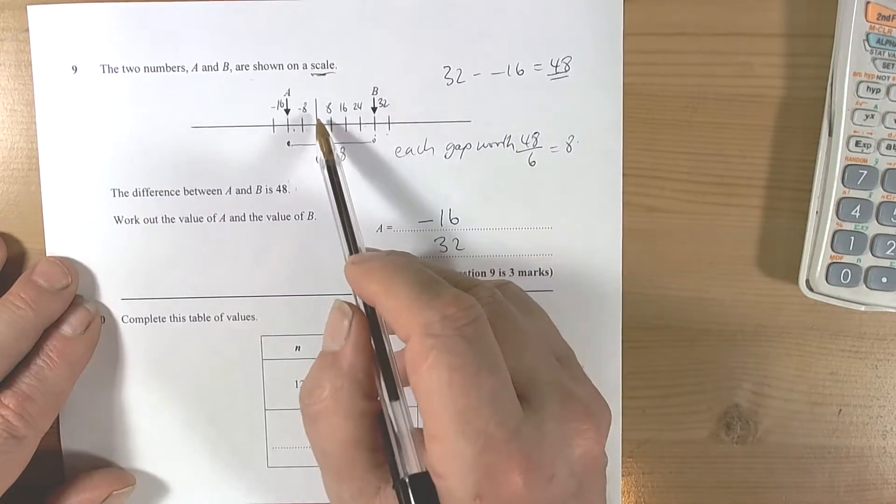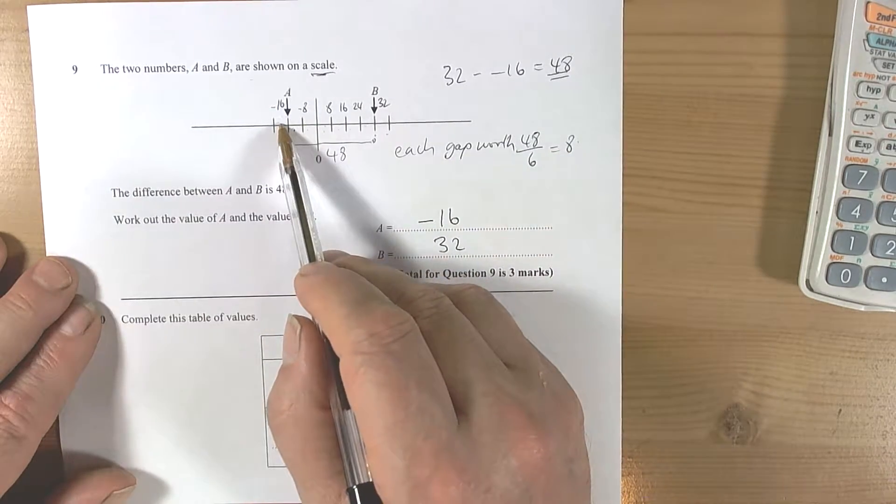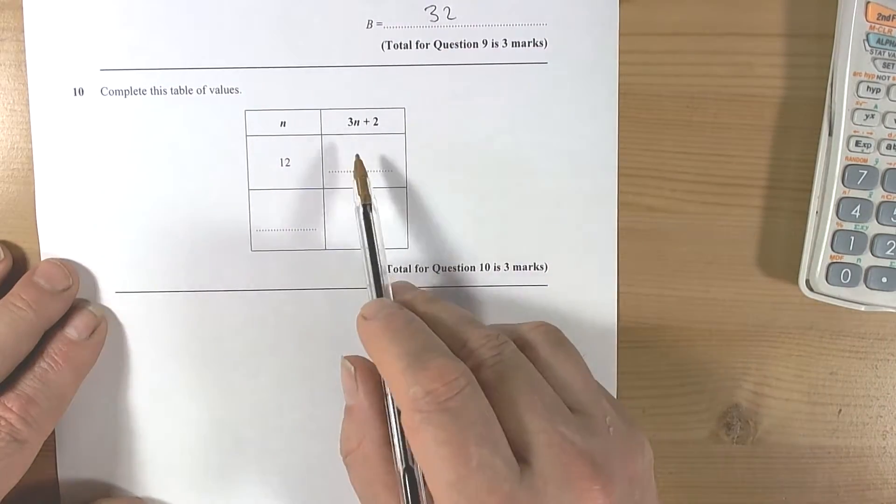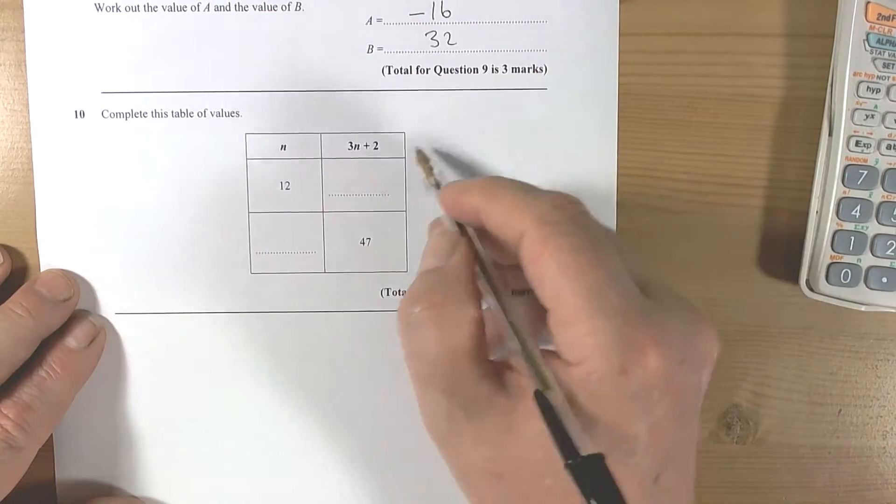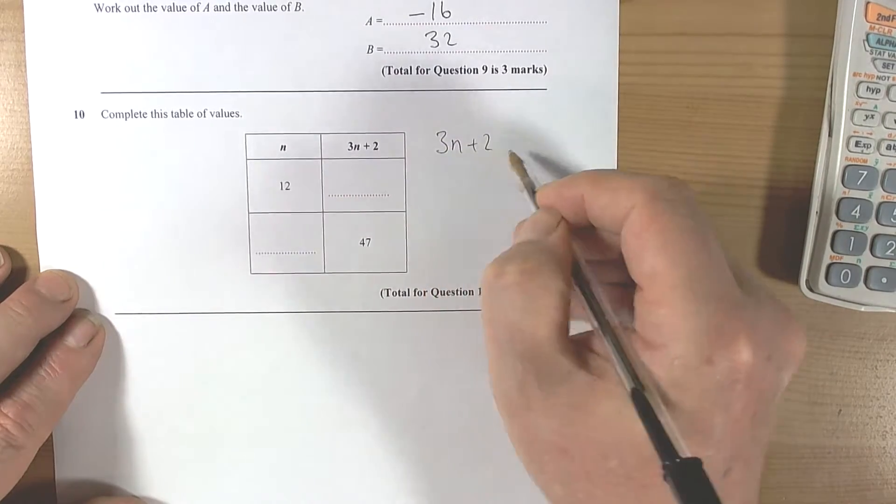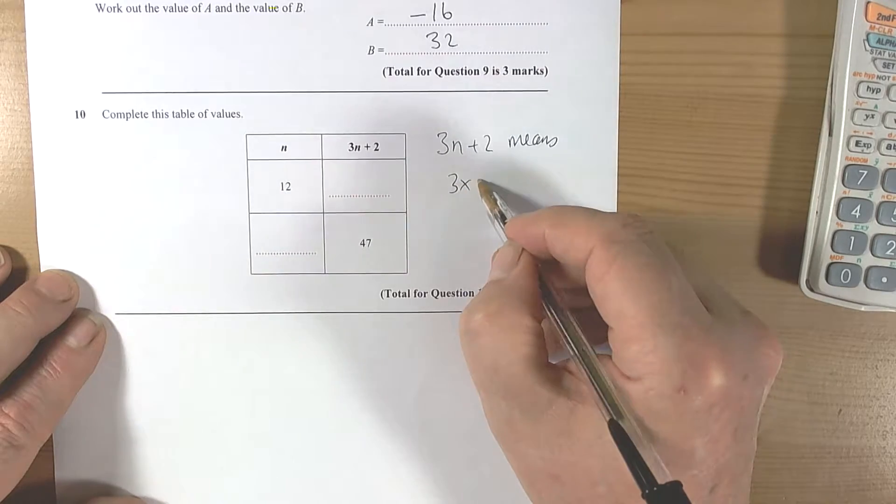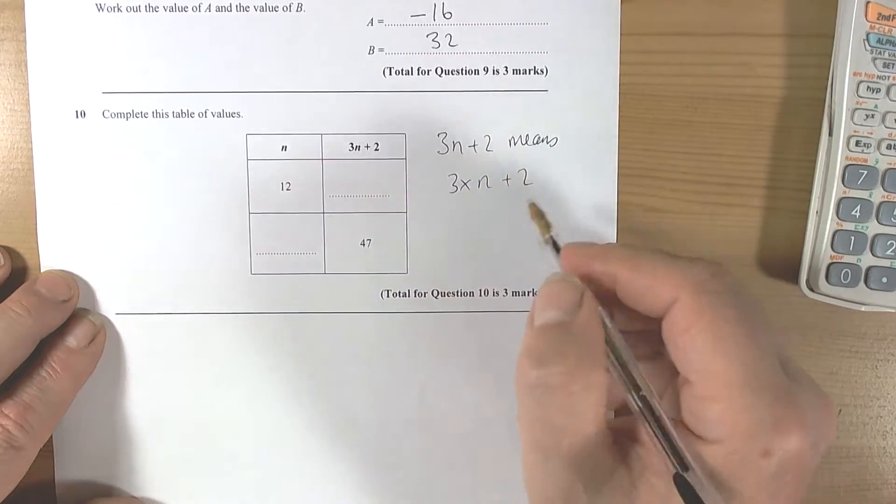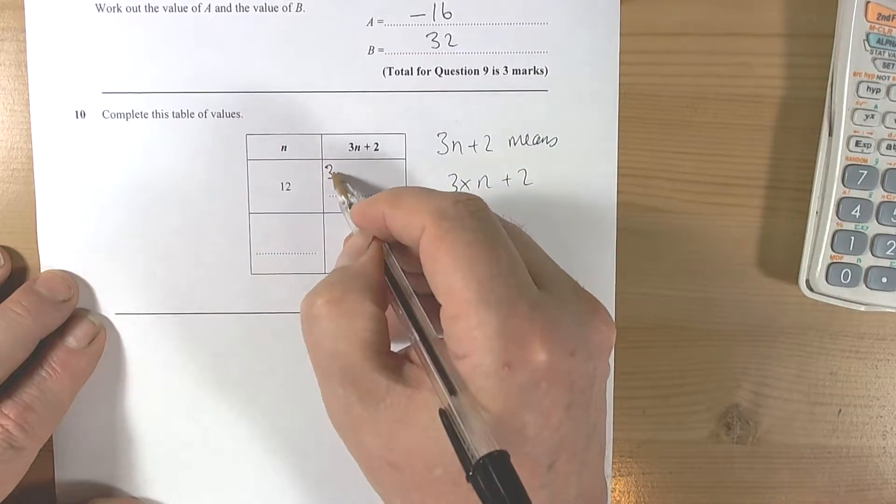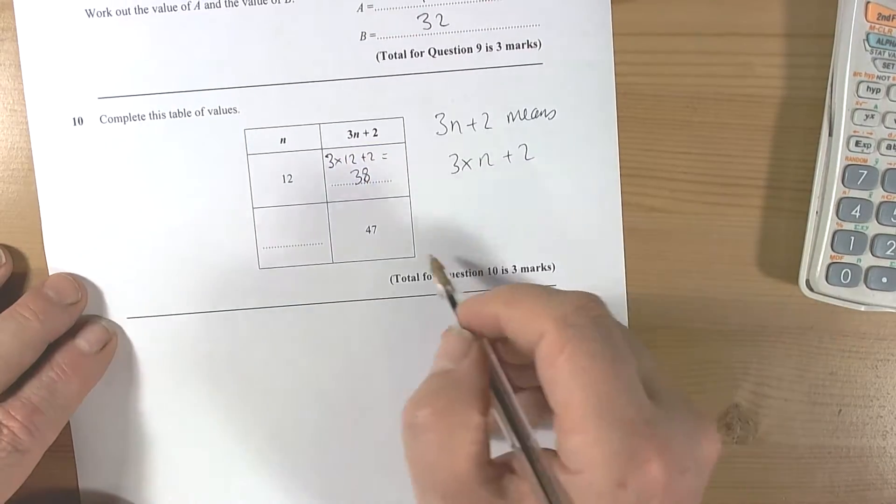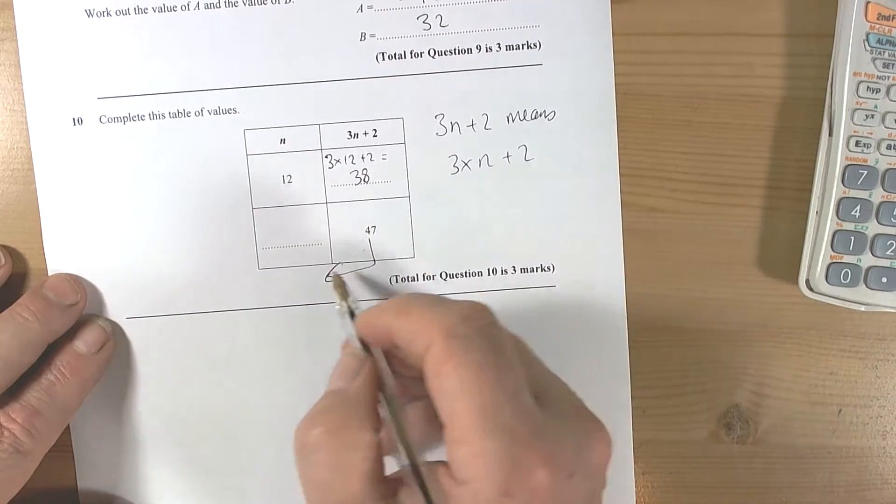So just go down negative 8, negative 16, and so on. Okay, so then this question says complete this table of values. We've got to remember that 3n plus 2 means three times n plus two. So for this question here, we're doing three times 12 plus 2, which equals 38.